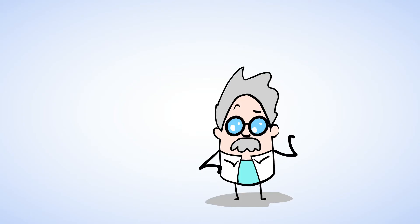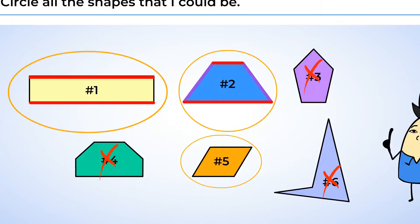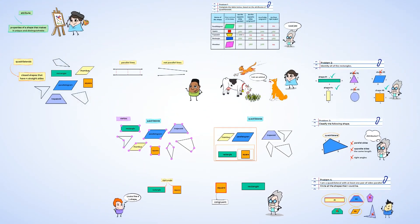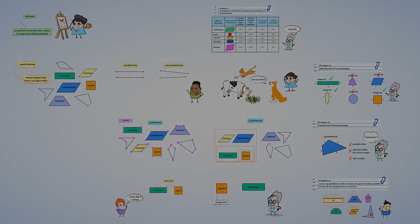Wow, you did a wonderful job identifying quadrilaterals by their attributes. You also now know the difference between a square and a rectangle. So far, so good. See you mighty soon.